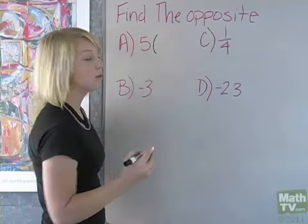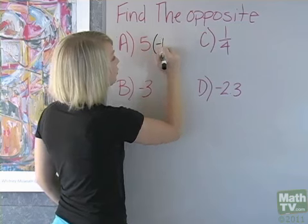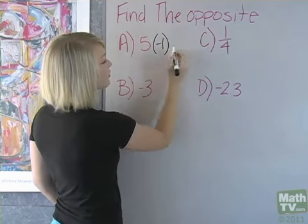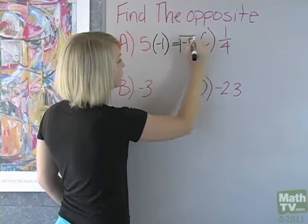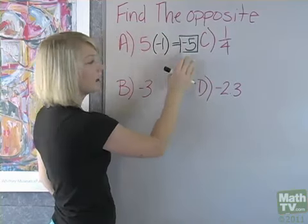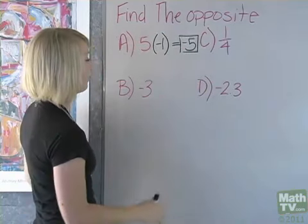To find the opposite of 5 we're going to multiply it by negative 1. 5 times negative 1 is going to give us negative 5. As you can see, negative 5 is the opposite of 5.